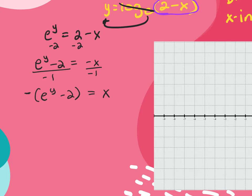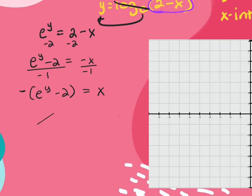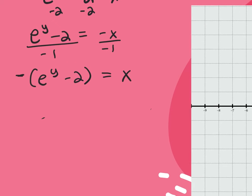Be careful: the negative is not on the e itself. You don't raise negative e to the exponent. Instead, you raise e to the exponent and then multiply the result by negative 1. The negative comes after you compute the power — so it's not negative e to the y; it's the result of e to the y, then made negative.